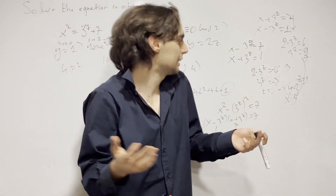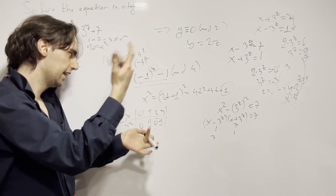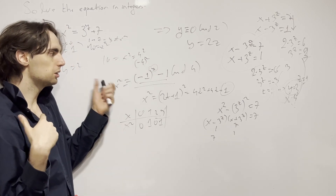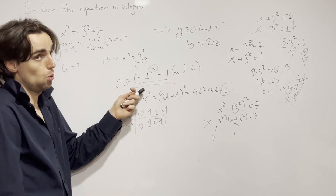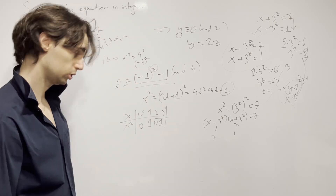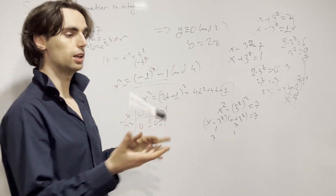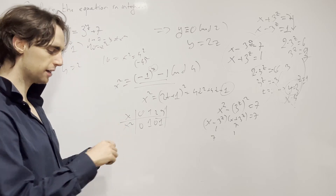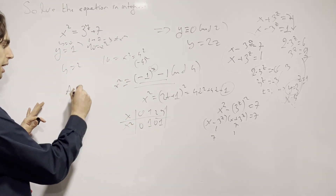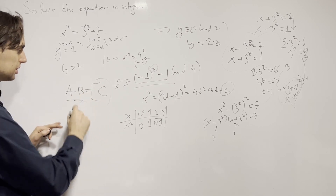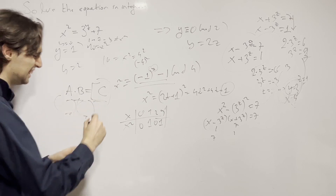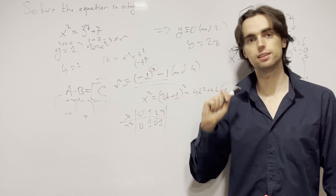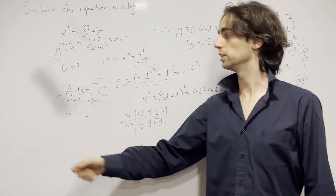To recap: we first verified y equals 2 gives a solution. Then by looking at remainders mod 4 on both sides, since x squared is only 0 or 1 mod 4, that forces y to be even. We wrote y as 2z, factored the equation as a product of two factors equal to 7, and since 7 is prime, there were limited cases. In number theory, getting a times b equal to a constant is a great situation. That finishes up the problem. Thanks for problem solving!